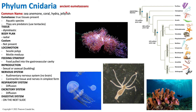Cnidarians are diploblastic. Since they have true tissue, we must ask whether it is diploblastic or triploblastic, because whenever we have tissues, we must consider symmetry. In Porifera they had no true tissue and were asymmetrical, but now dealing with tissue we ask what's the symmetry and how many tissue layers we have. Diploblastic means two layers of tissue. Within Cnidaria, we have ectoderm and endoderm, but no mesoderm — therefore it is diploblastic.